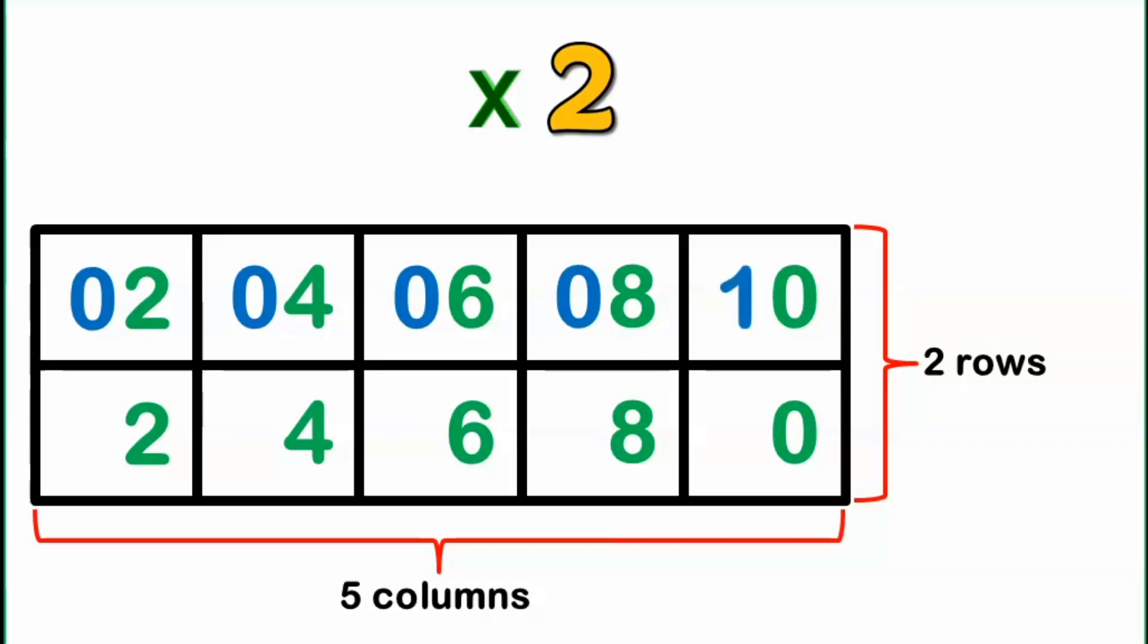For the second row, we just put 1 all throughout. Except again for the last one, in which we put 2 instead. And that's it. We actually have now the numbers we need for the two times table.